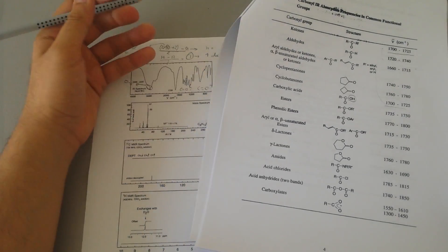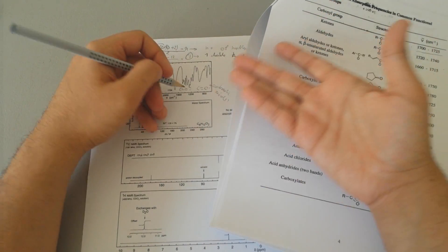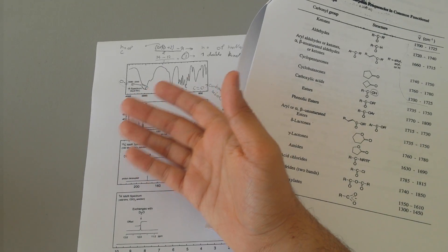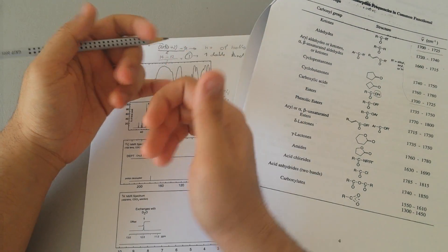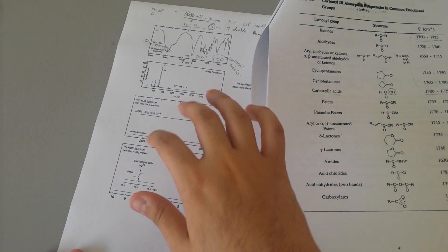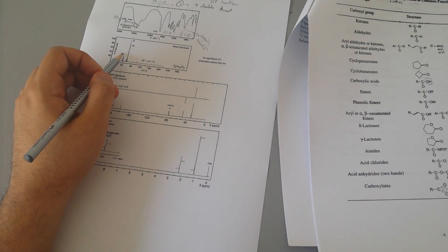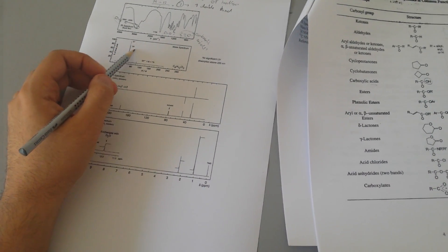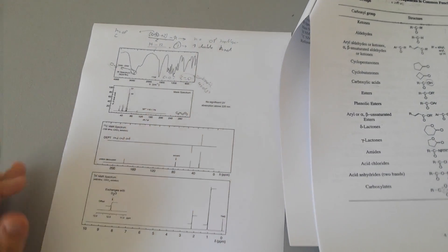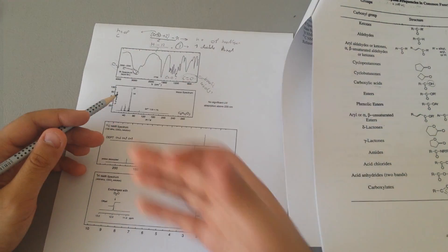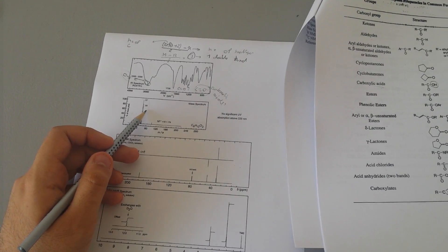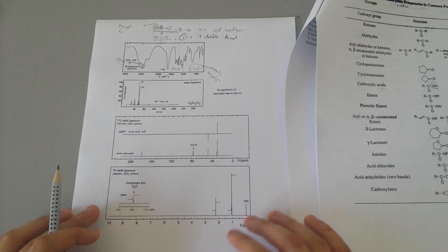Carboxylic acid makes more sense because it has C=O, O-H, and C-O-O. But we can't just say it's carboxylic acid, because there's an OH here — it could be a ketone with an OH somewhere else. So we'll assume two possible structures, but I'm going to lean toward carboxylic acid and confirm it later. I usually do mass spectroscopy at the end to just confirm the right structure.